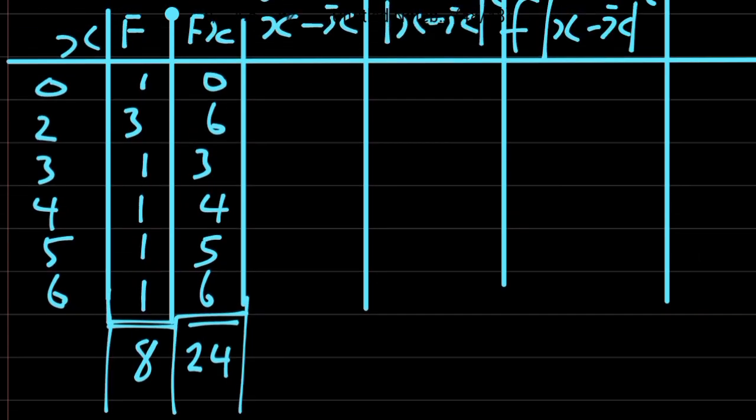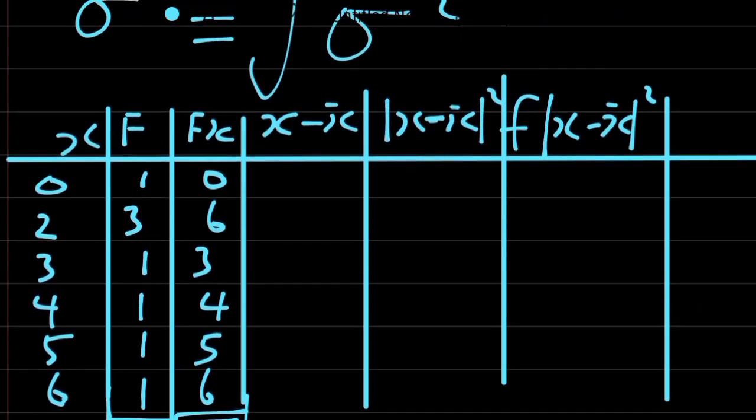So x minus mean: 0 minus 3 is minus 3, 2 minus 3 is minus 1, 3 minus 3 is 0, 4 minus 3 is 1, 5 minus 3 is 2, 6 minus 3 is 3.